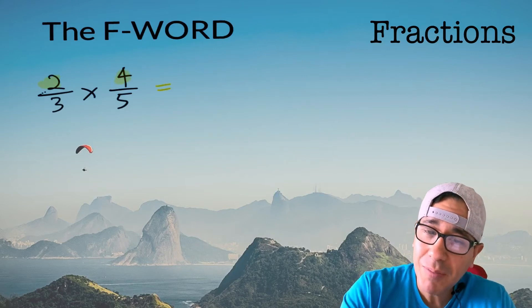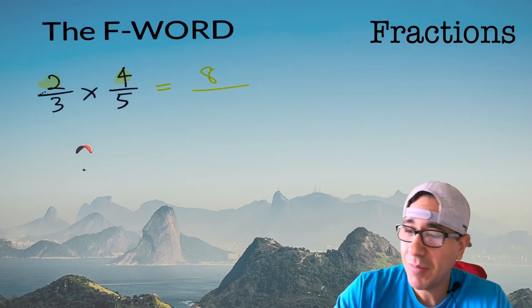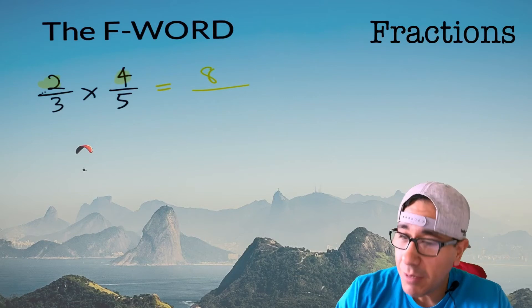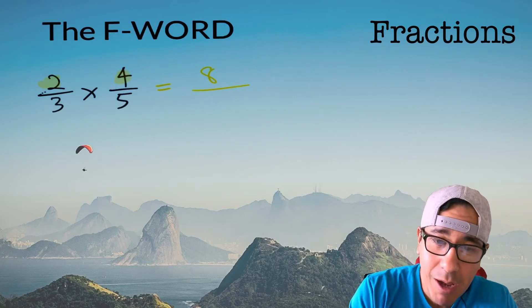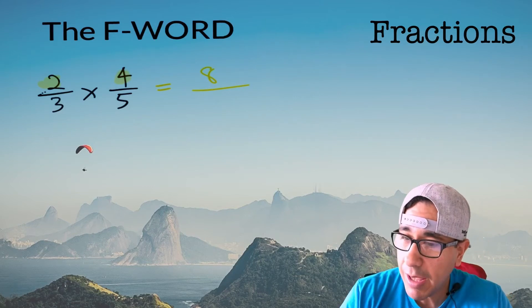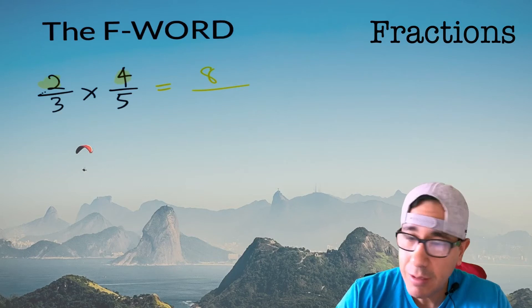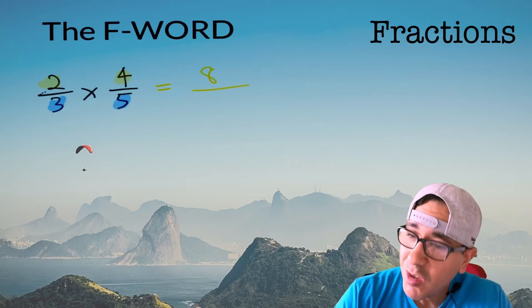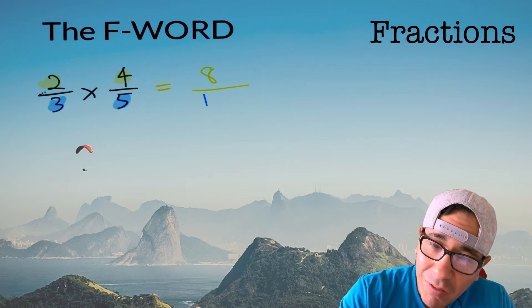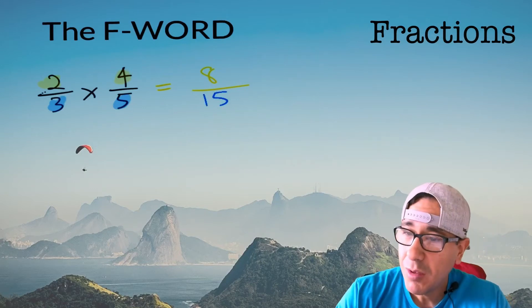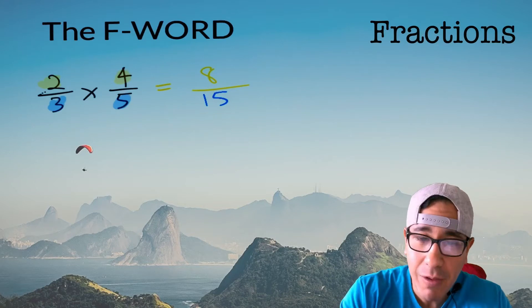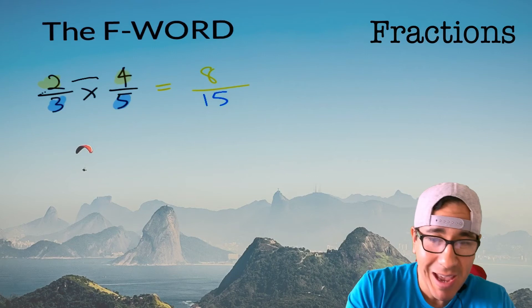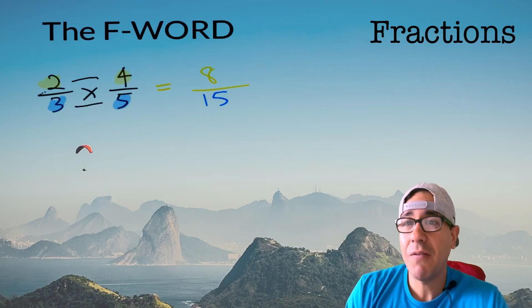And then we multiply the number on bottom times the number on bottom. So we get 15, right, 3 times 5. So let me recap that real fast - we did 2 times 4 gave us that 8 and then 3 times 5 gave us that 15.